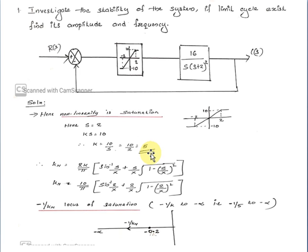Substitute K equal to 2 and the value: KN equals (10/π) into [sin inverse(2/X) plus (2/X) into root of (1 minus (2/X)²)].